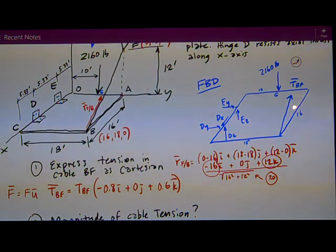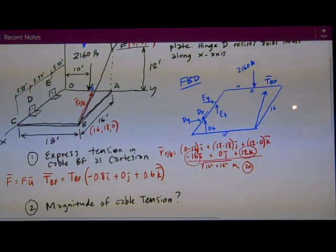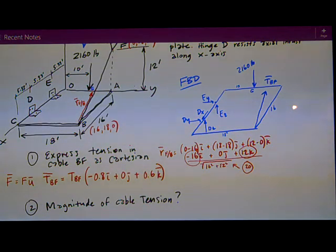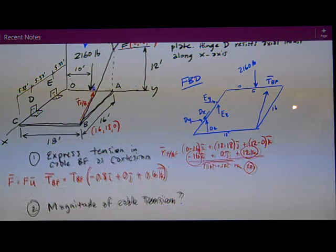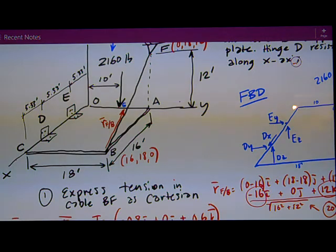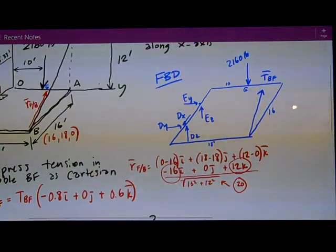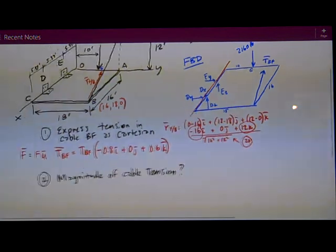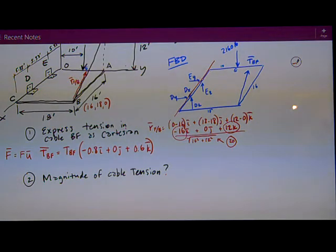Second question is to solve for the tension in the cable. Well, I could do sum moments about one of those hinges, D or E, eliminate those unknowns. Still I'd have three equations, three unknowns to solve for. So a more powerful solution method is to sum moments about a line. And so that's what I want to do. I want to sum moments about this x-axis to eliminate all five of those unknown forces.